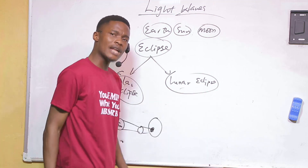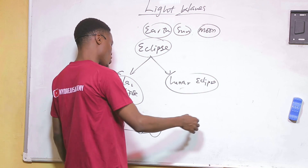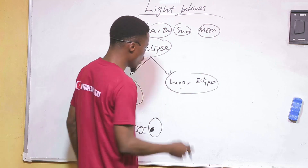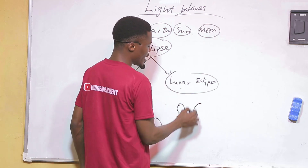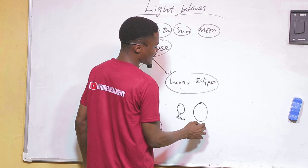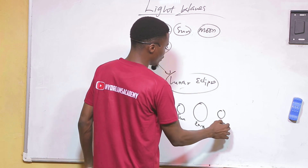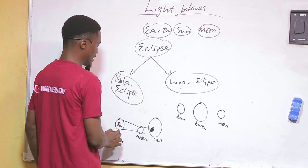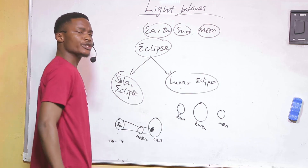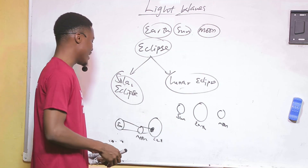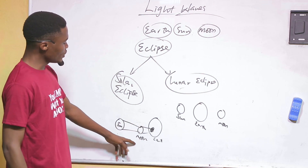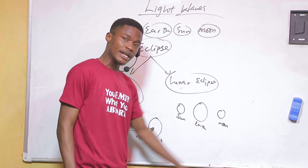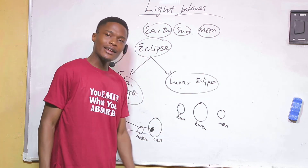A lunar eclipse occurs when the earth is between the sun and the moon. So the earth is in the middle, with the sun on one side and the moon on the other. The major difference between the two types of eclipse: a solar eclipse occurs when the moon is in between the sun and the earth, and a lunar eclipse occurs when the earth is in between.